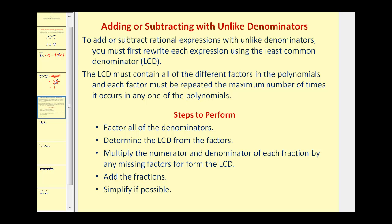To add or subtract rational expressions with unlike denominators, we must first rewrite each expression using the least common denominator. So we have to have a common denominator to add or subtract rational expressions. The LCD must contain all of the different factors in the polynomials, and each factor must be repeated the maximum number of times it occurs in any one of the polynomials.